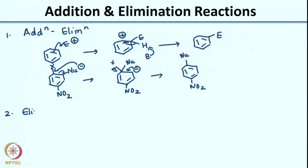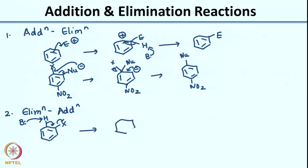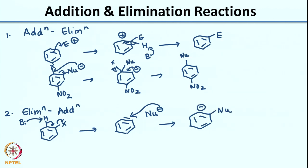You can also have elimination followed by addition. A classic example is an aromatic compound substituted by a halogen: using a very strong base generates what is called a benzyne intermediate. This benzyne intermediate can then interact with a nucleophile to give the substitution product. This is an example of an elimination-addition reaction.